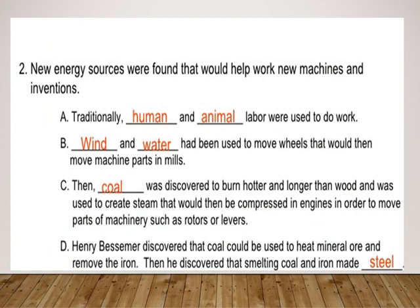New energy sources were found to help power new machines and inventions. Traditionally, human and animal labor were used. Wind and water had been used to move wheels that would then move machine parts in mills. Then coal was discovered — it burned hotter and longer than wood and was used to create steam, which was compressed in engines to move parts of machinery such as rotors or levers. Henry Bessemer discovered that coal could be used to heat mineral ore and remove iron, and that smelting coal and iron together made steel.